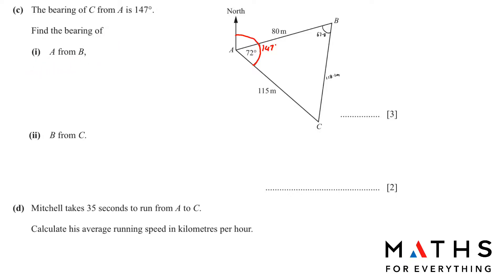Now find the bearing of A from B. The angle between the north and the line AB at A is 147 − 72 = 75 degrees. To find the bearing of A from B, take that interior angle of 75° and add 180°, giving 255°.